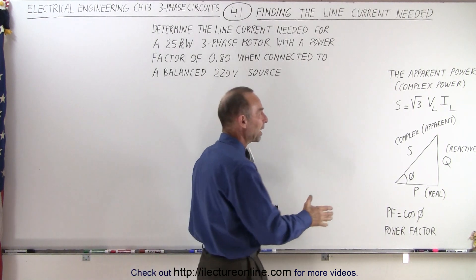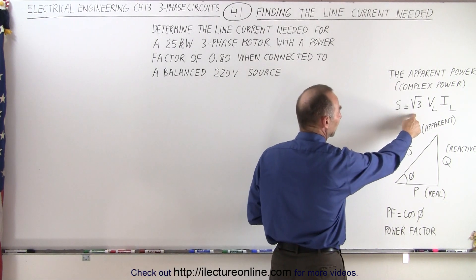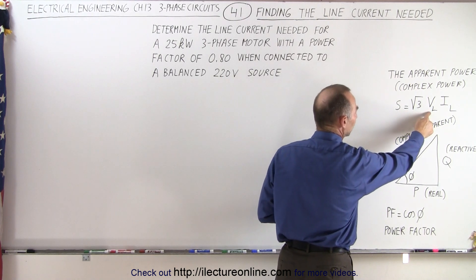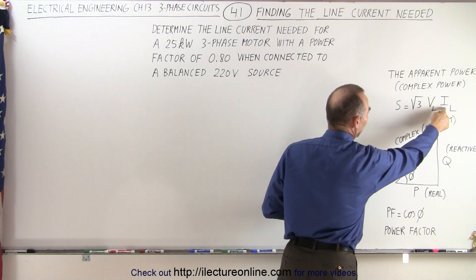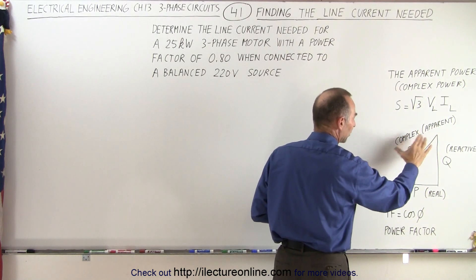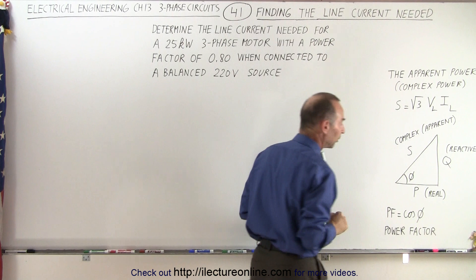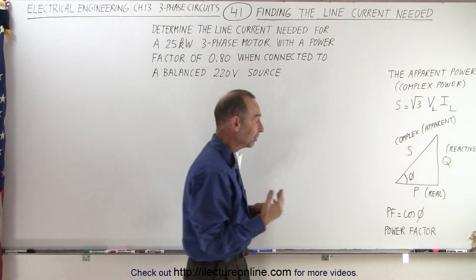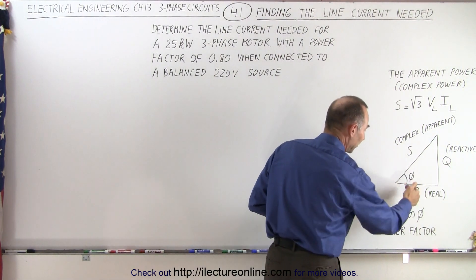We're dealing with the concept where we have the apparent power defined as the square root of three times the line voltage times the line current. We have the triangle representing the complex or apparent power, the reactive power, and the real power, and then the power factor defined by the cosine of the phase angle.